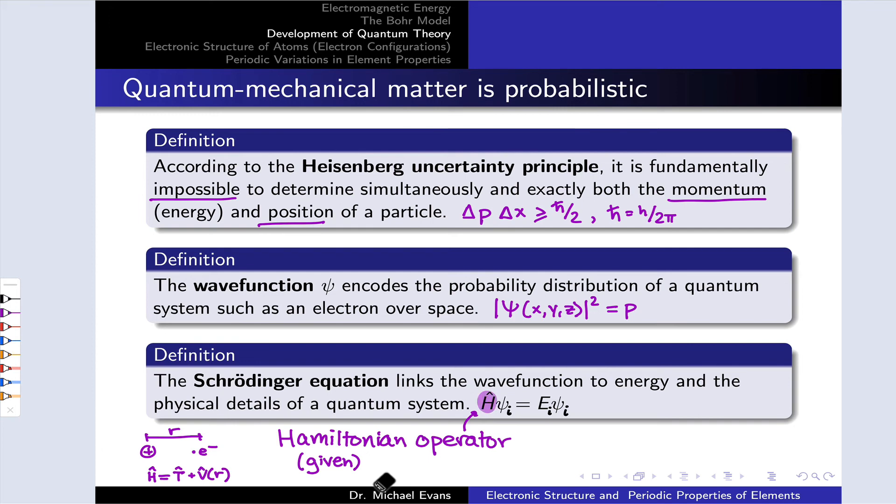Knowing that and having mathematical tools to solve this equation, the solutions that come out of the equation include two pieces: the E values, which are the energies allowed for electrons with these various wave functions,